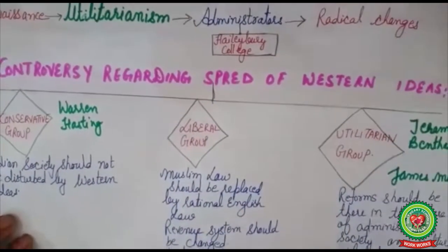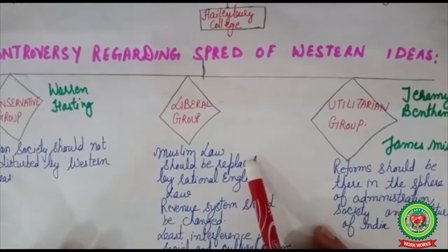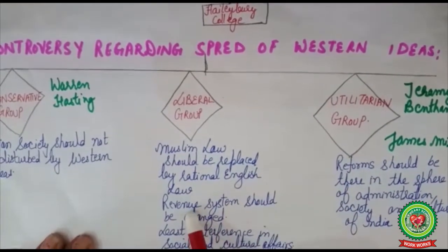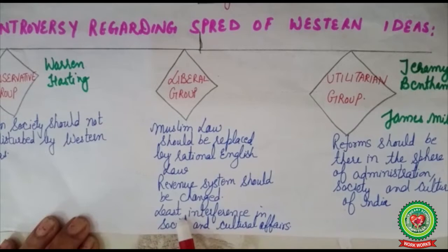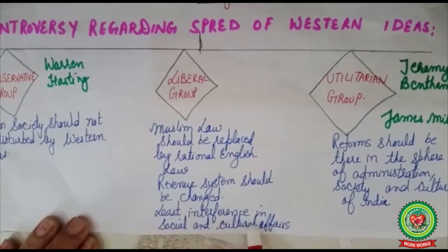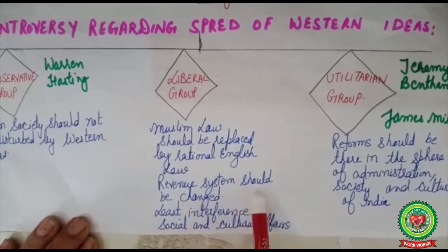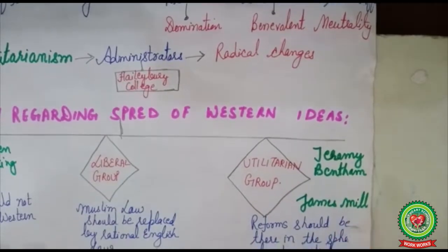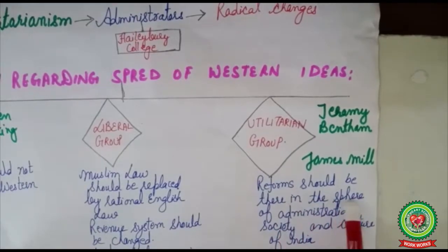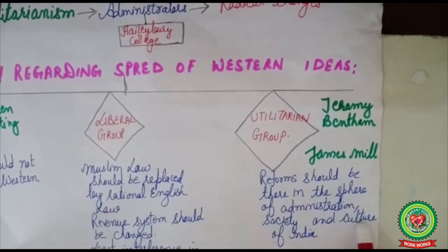The liberal group was of the view that Muslim law should be replaced by rational English law, and the revenue system of India should also undergo changes. However, it believed that least interference should be made in the social and cultural affairs of India, to avoid provoking Indians against the British. The utilitarian group, led by Jeremy Bentham and James Mill, believed that reform should be introduced in every sphere of administration — society, culture, and religion.